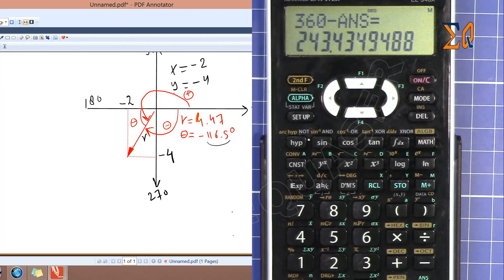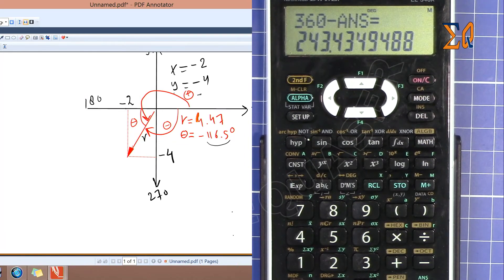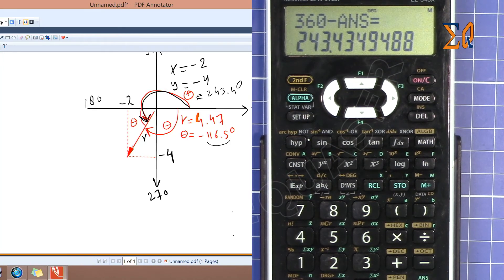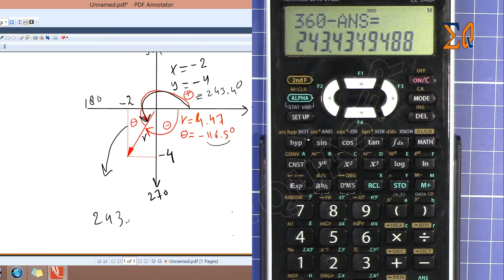243.4. So this angle is 243.4 degrees from here up to here. Now to get this theta, you have to make 243.4 minus 180.